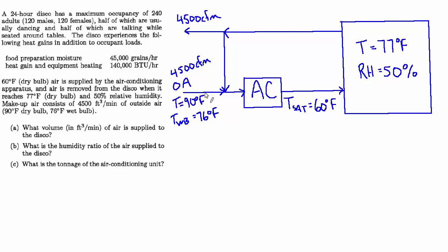So for the first part, part A, they want to know the volume in CFM of air supplied to the disco. For that, let's use our good old rule of thumb which says QS equals 1.08 CFM Delta T, with the understanding that when we use this formula we have to use the sensible heat load only, and the volume flow rate will go in with units of CFM, that's implied, and the Delta T will be the difference in temperature between the room and the supply air.